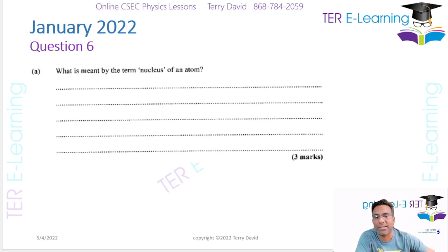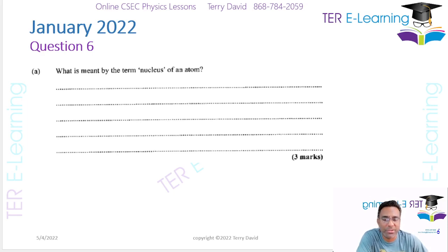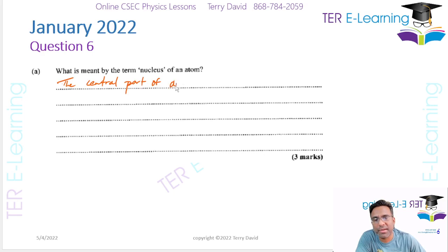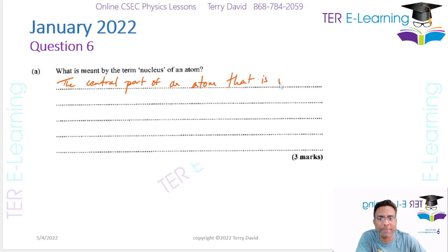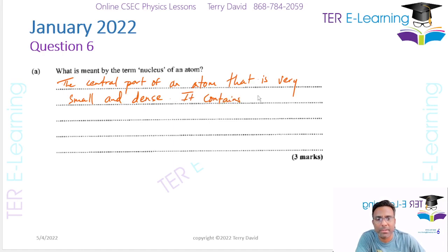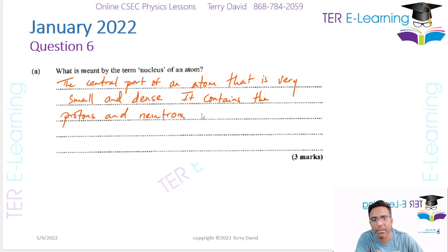Question 6 asks: what is meant by the nucleus of an atom? The nucleus of an atom is simply the central part of an atom, which is very small and dense. It contains the protons and neutrons of the atom.